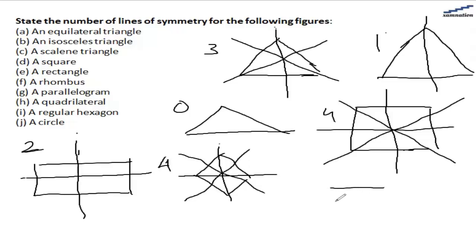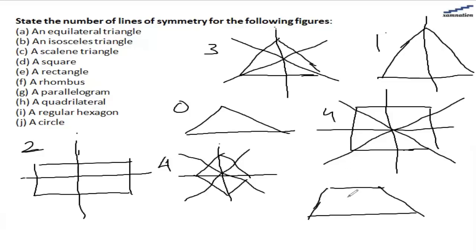For a parallelogram, these sides are parallel but the other sides are non-parallel, and they are not equal. So we cannot have any line of symmetry in this object, unless these two sides are the same. But if they are not the same, we cannot have any line of symmetry.